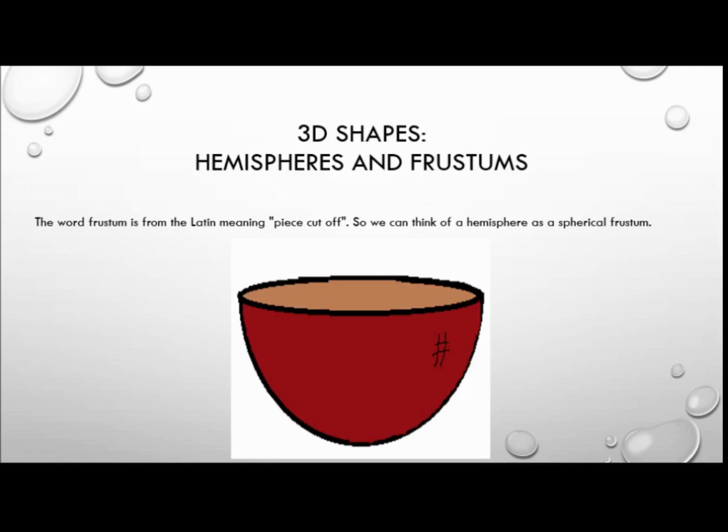The word frustum is from the Latin meaning 'piece cut off'. So we can actually think of a hemisphere as a spherical frustum.